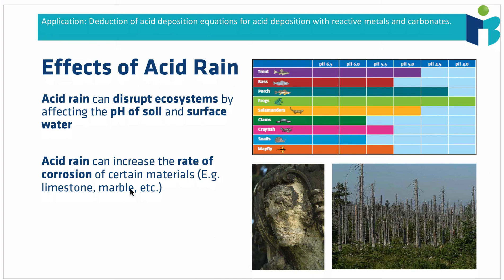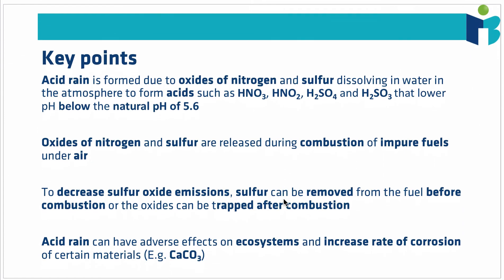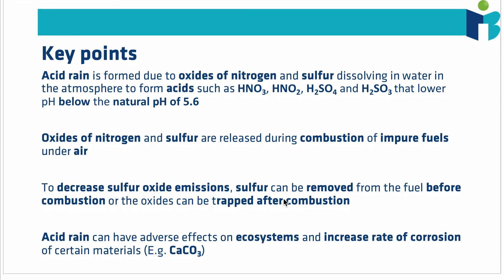Acid rain also results in the corrosion of certain materials — things like limestone and marble, which are both based on calcium carbonate. We know how acids react with carbonates to form CO₂, water, and a salt — they simply corrode and dissolve these materials. That means statues can get dissolved, and naturally occurring cliffs or limestone and marble rock formations can dissolve as well.